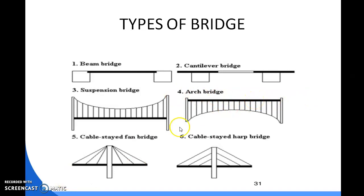Next is the suspension bridge. It holds the weight of the bridge with cables. These cables are connected, and in ancient times these bridges were made from rope or vines. Today steel is used for construction. Subtypes include the simple suspension bridge, the stressed ribbon bridge, the underspanned suspension bridge, the suspension deck suspension bridge, and the self-anchored suspension bridge.